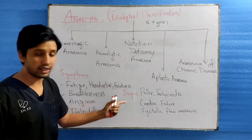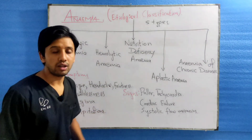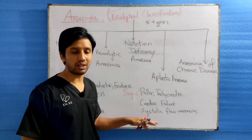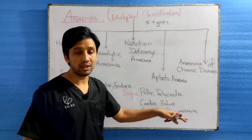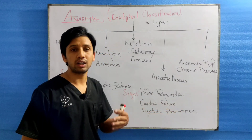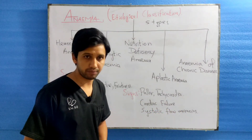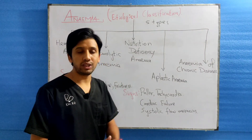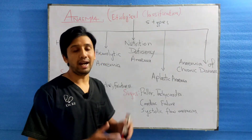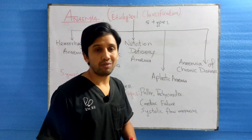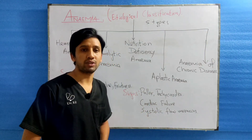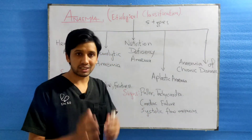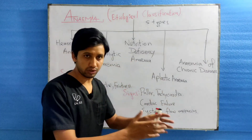Regarding signs, there will be pallor, tachycardia, cardiac failure, and systolic flow murmur in an anemic patient. There are also some specific signs like koilonychia, leg ulcers, and jaundice, which are seen in specific types of anemias and will be discussed in my next videos.